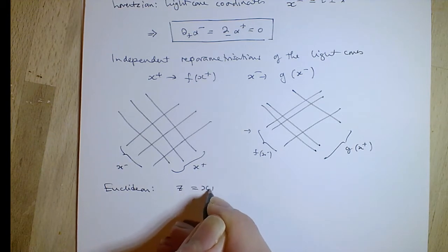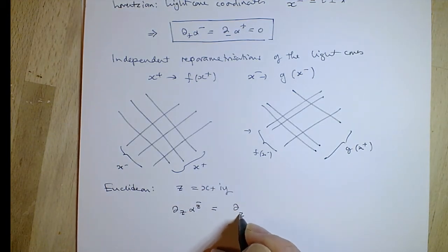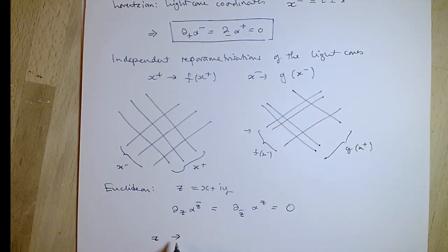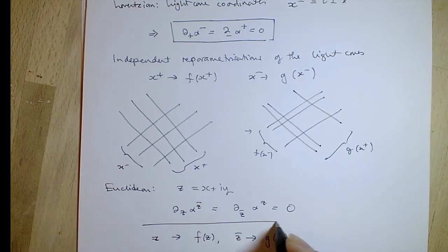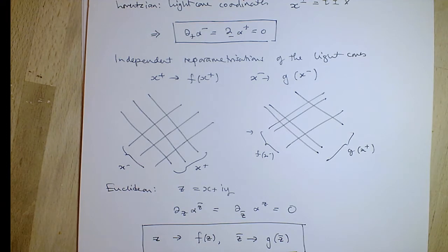In Euclidean space, if z = x + iy, then the equations are the Cauchy-Riemann equations, saying that alpha of z-bar is a function of z-bar and alpha_z is a function of z. So z can go to an arbitrary function of z, and z-bar to an arbitrary function of z-bar, where those are analytic functions — again two infinite-dimensional independent symmetries.